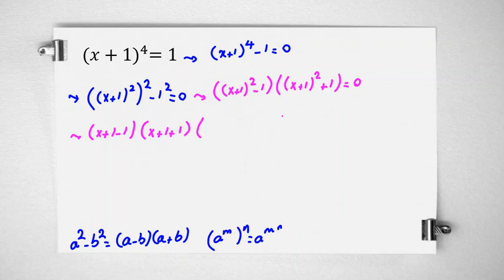We use this identity that a plus b squared equals a squared plus b squared plus 2ab. And it will be what?